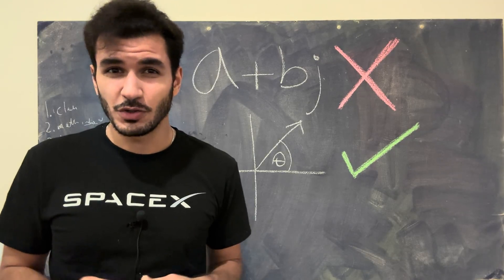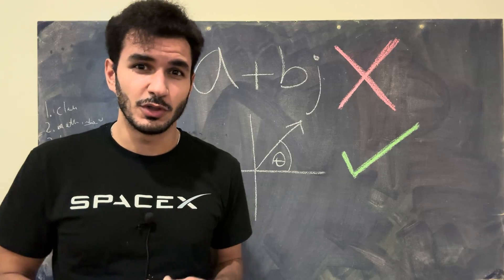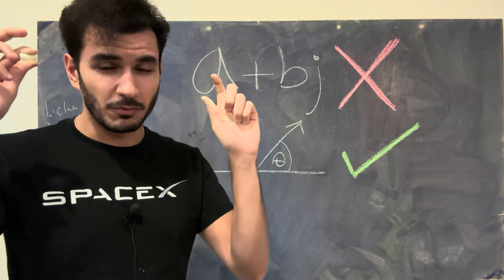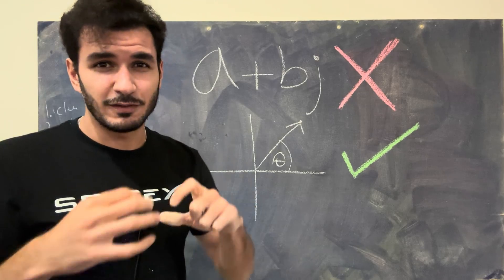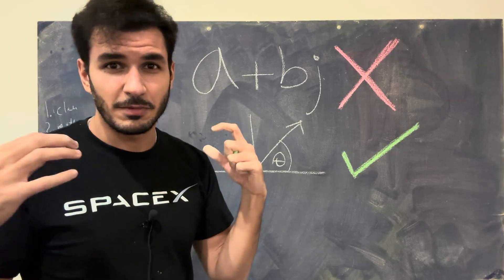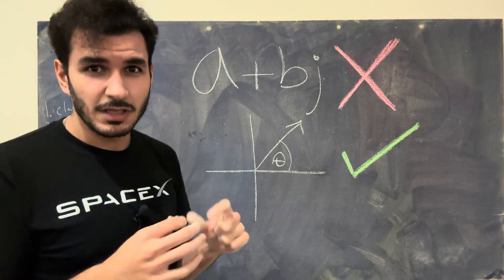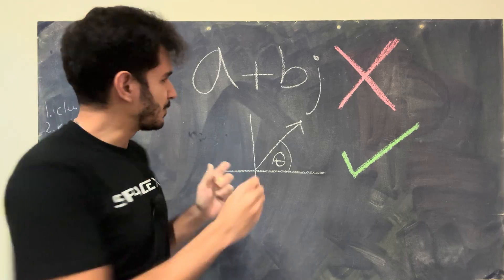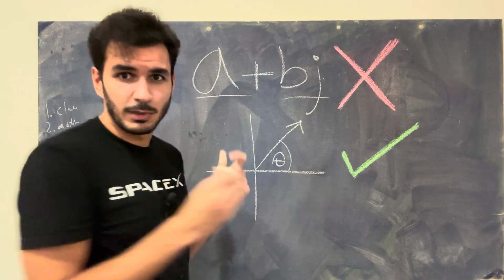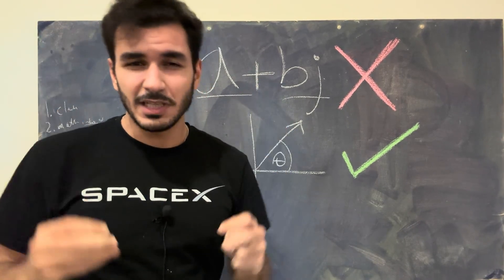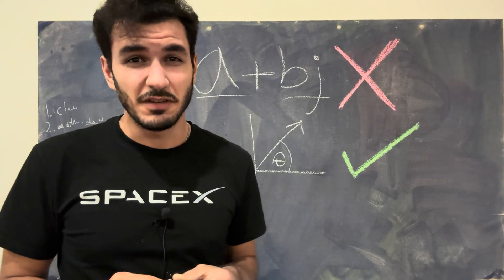That's another one of those stupid names that are more often confusing than helpful. It does make sense that we call them complex numbers because 'complex' is kind of like when you're calling something an apartment complex — it's made up of a bunch of things. So complex just means it has multiple components, separated by this plus sign. So in a way, it is complex, but it is not complicated. It's actually very, very simple.